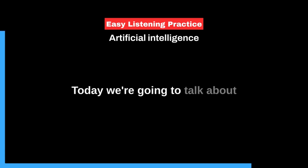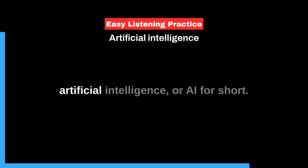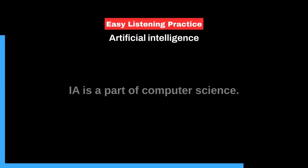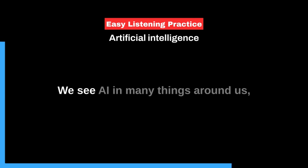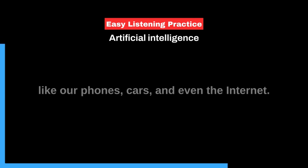Today, we're going to talk about artificial intelligence, or AI for short. AI is a part of computer science. It's about making machines think and learn like humans. We see AI in many things around us, like our phones, cars, and even the internet.